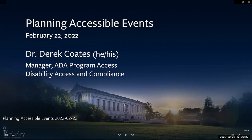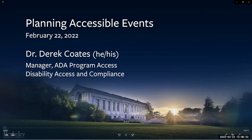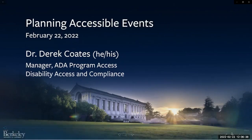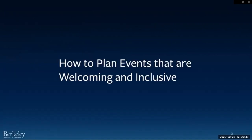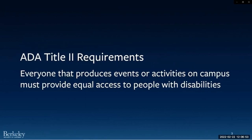Hi, my name is Dr. Derek Coates. I am the Manager of ADA Program Access in the Office of Disability Access and Compliance. I use he and his pronouns. This workshop focuses on planning accessible events at UC Berkeley. The goal is to help everyone understand how to plan accessible events on campus. ADA Title II requirements require that everyone who produces events and activities on campus provide equal access to people with disabilities.